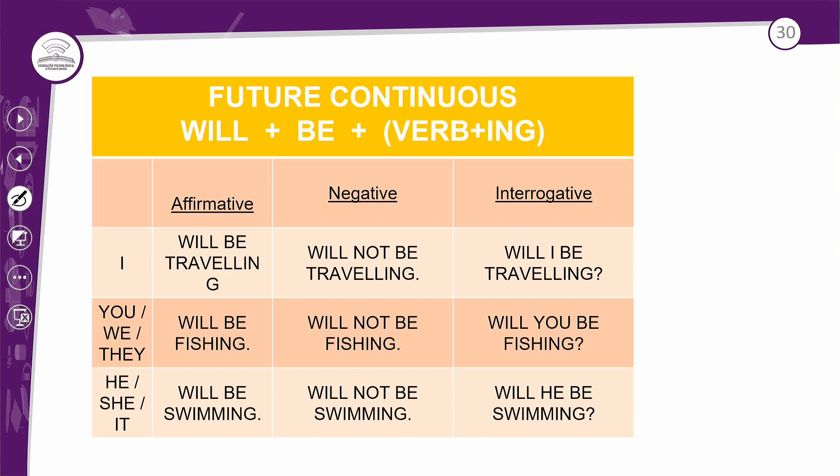É usado também para falar sobre combinações certas e planos fixos. Por exemplo: 'The band will be performing live in Paris this summer.' A banda estará performando ao vivo em Paris este verão. São combinações certas e planos fixos — porque realmente eles vão performar, vão fazer o show lá e é fixo.